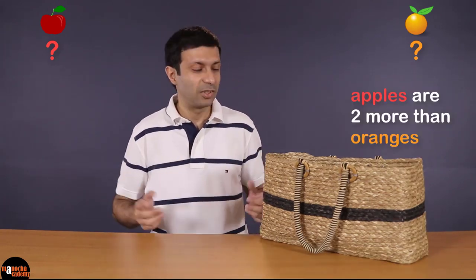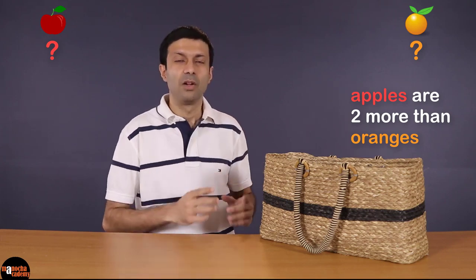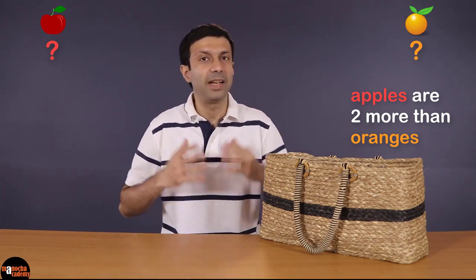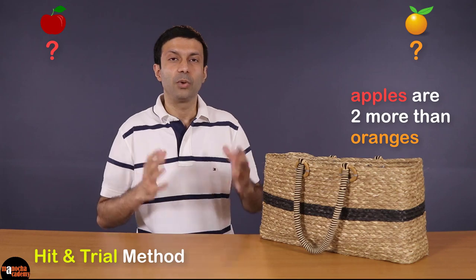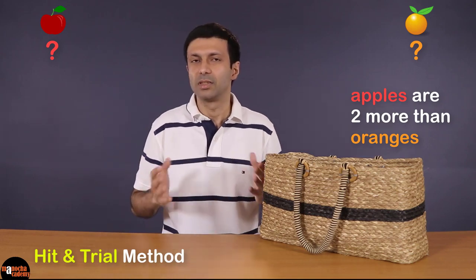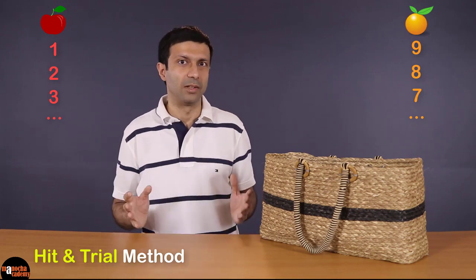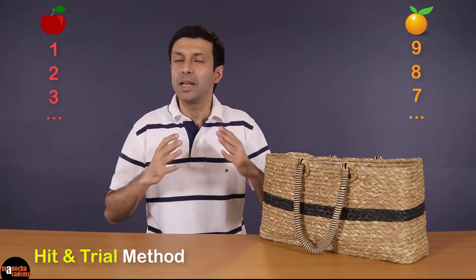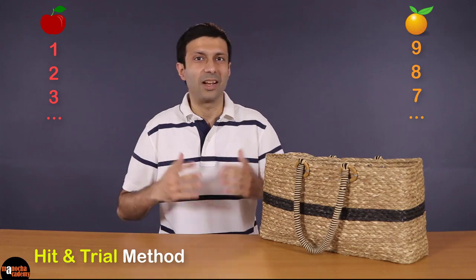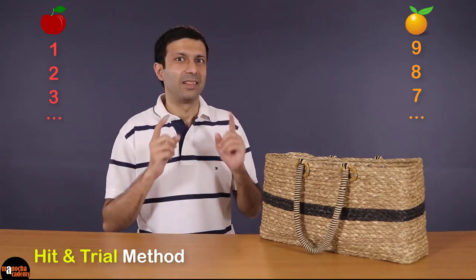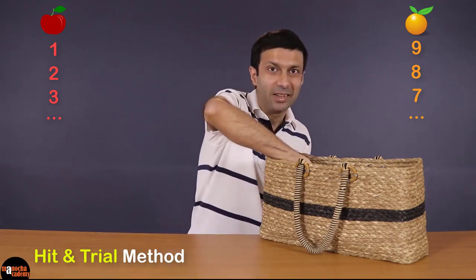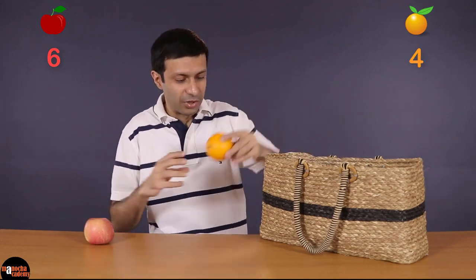There are many ways to solve this puzzle. One simple method is the hit and trial method, where you can try different values such as 1 apple, 9 oranges, 2 apples, 8 oranges and so on and see which values will fit the puzzle. So if you keep trying like that, what is the answer that you get? That's right, it's going to be 6 apples and 4 oranges.